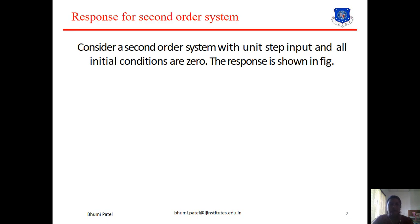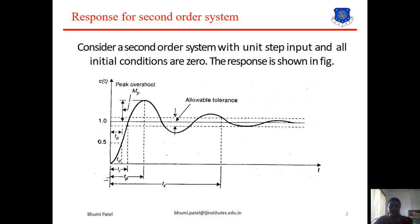First, the response for a second order system. In most control systems, the damping ratio is less than 1, so the time response of the system will always be oscillatory. The performance characteristics of any control system are specified in terms of the time response to a unit step input, because if the response to a step input is known, it is mathematically possible to compute the response to any input signal. Here, a second order system with unit step input and all initial conditions equal to zero gives the response shown in this diagram.